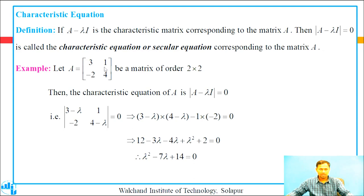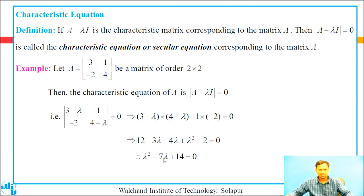First row [3 minus lambda, 1], second row [-2, 4 minus lambda] equal to 0. This implies (3 minus lambda)(4 minus lambda) minus (1)(minus 2) equals 0. Expanding: 3 times 4 is 12, 3 times minus lambda is minus 3 lambda, minus lambda times 4 is minus 4 lambda, minus lambda times minus lambda is positive lambda squared, and 1 times minus 2 gives minus 2, which becomes positive 2. Therefore, lambda squared minus 7 lambda plus 14 equal to 0. This is the required characteristic equation of the given matrix.